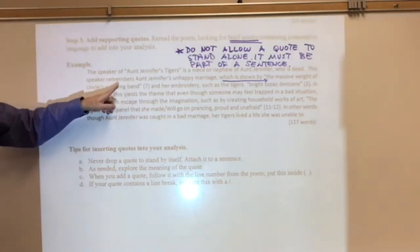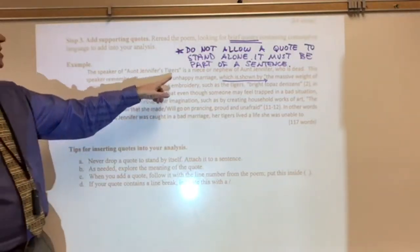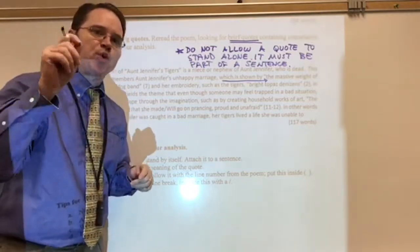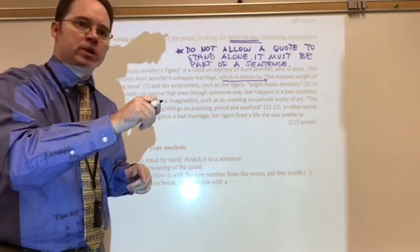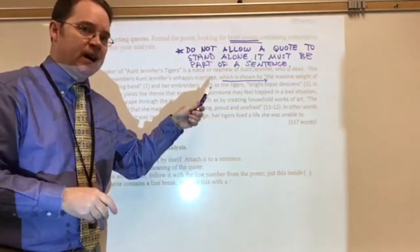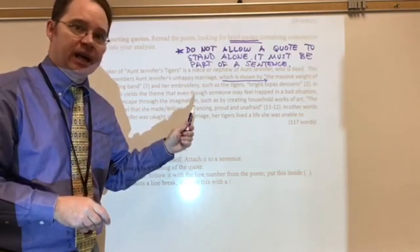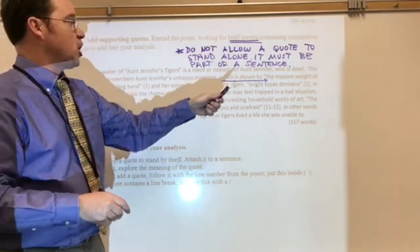Right? So, here's my claim. The speaker remembers Aunt Jennifer's unhappy marriage. Prove it. Where in the poem do we see that? If I can't find the evidence, I can't make that claim.